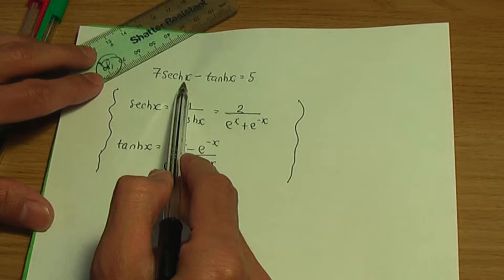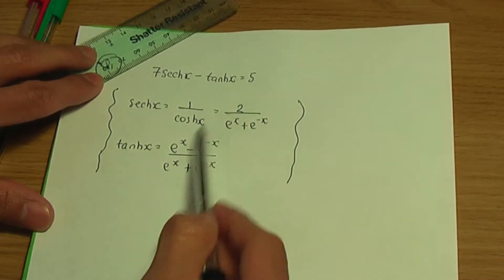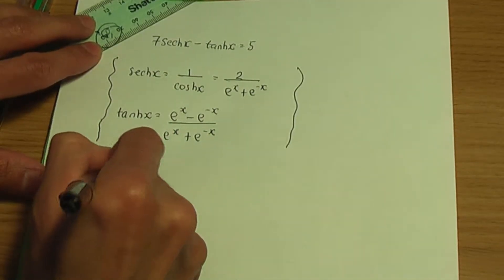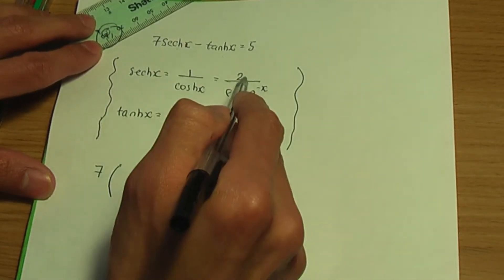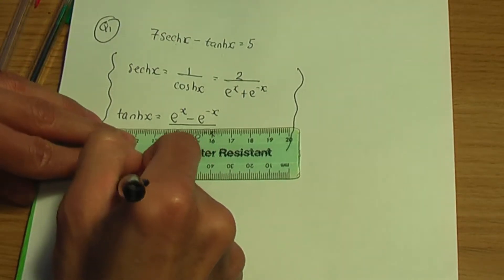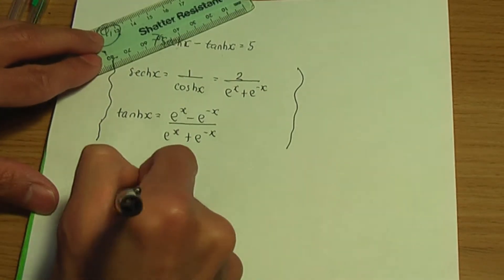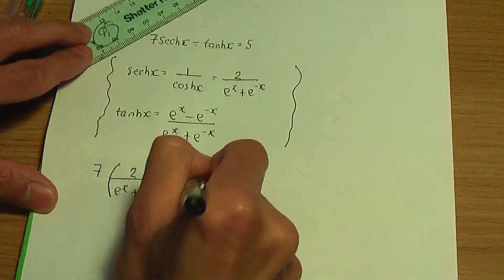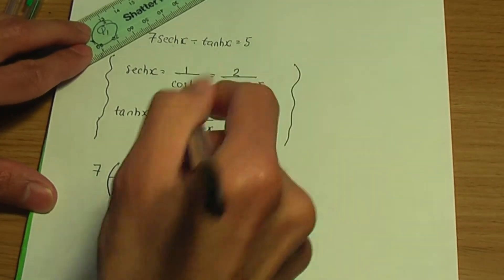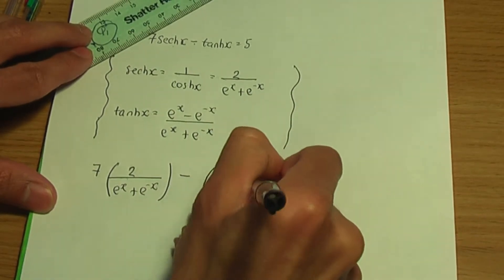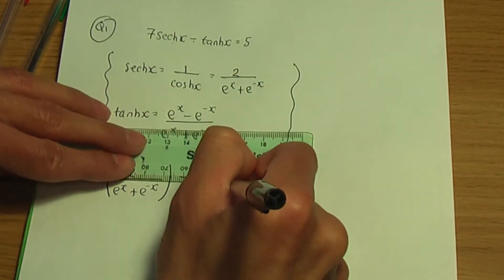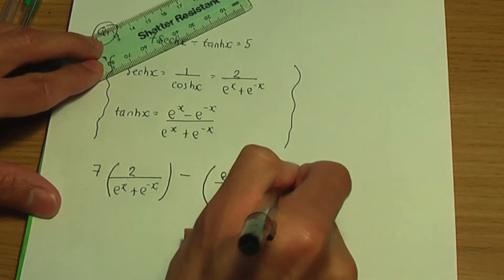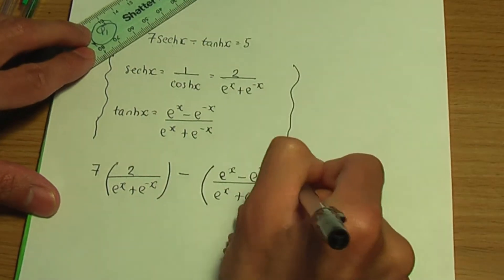Now I'm going to replace hyperbolic sech and hyperbolic tanh x by their exponential definitions. This gives us 7 times [2 / (e^x + e^{-x})] minus [(e^x minus e^{-x}) / (e^x + e^{-x})] is equal to 5.